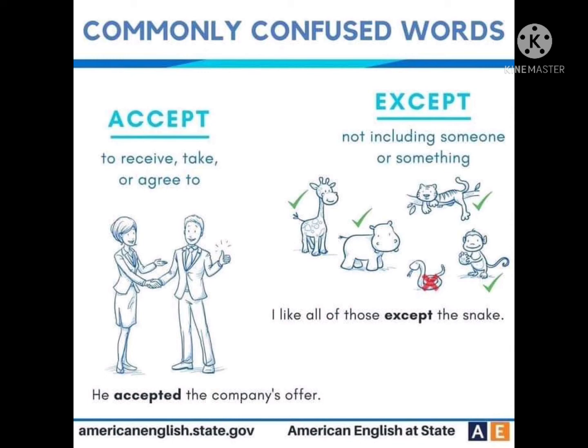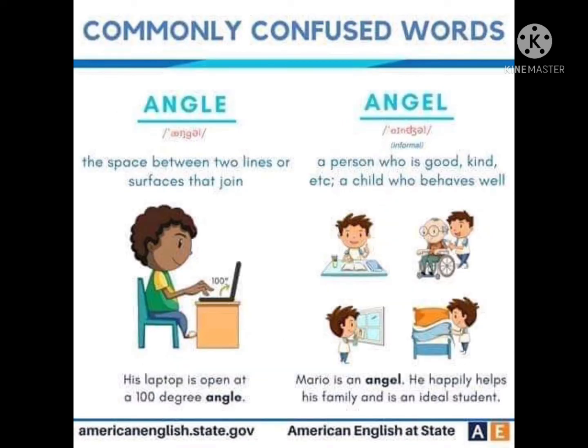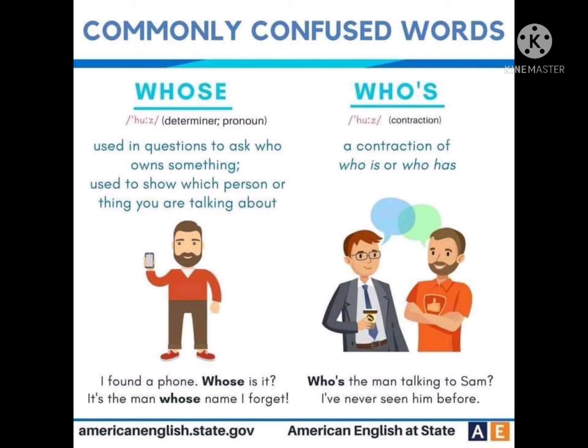Accept — the first one is a famous verb. Principle, principal — principle is very important. Angle and angel. Affect, effect — with A it's a verb, with E it's a noun. Whose, who's — who is, or whose.